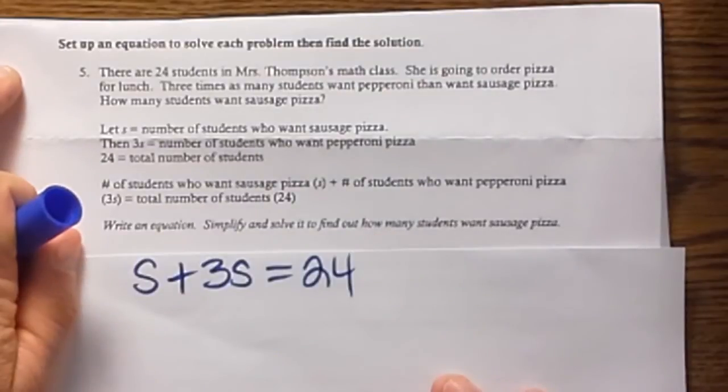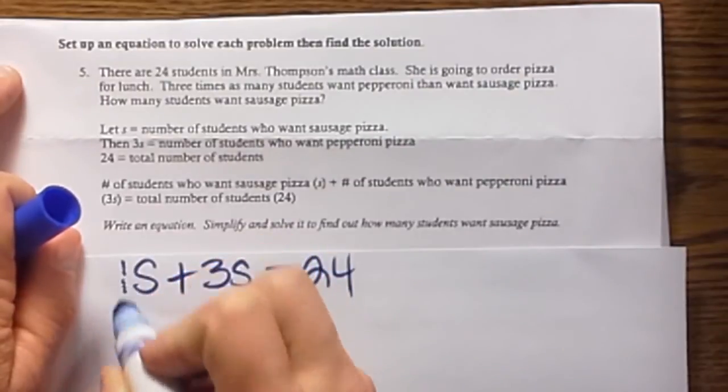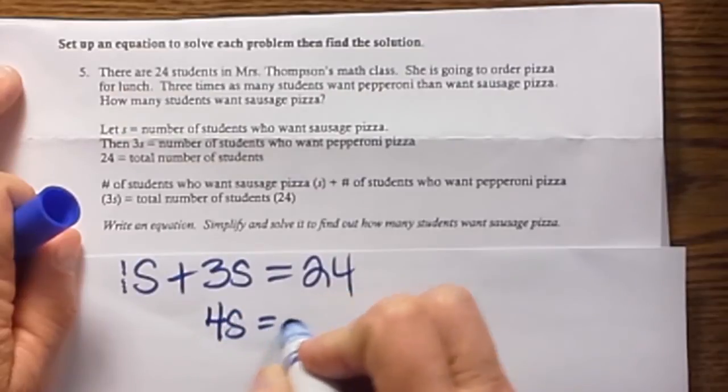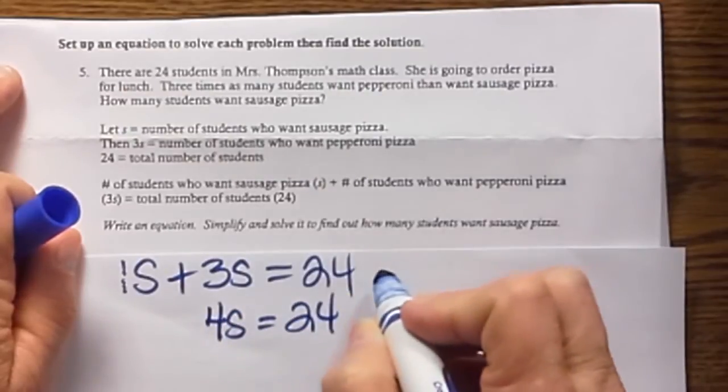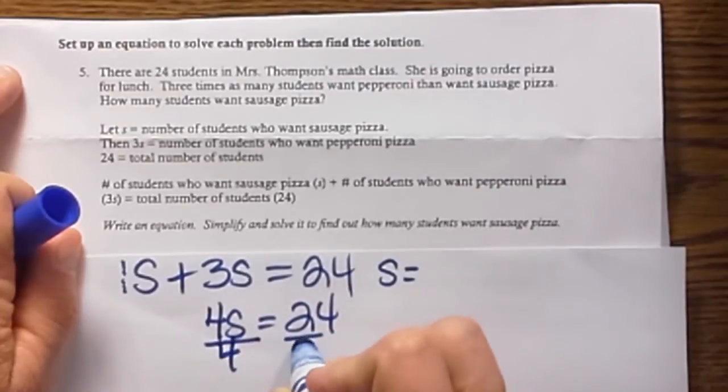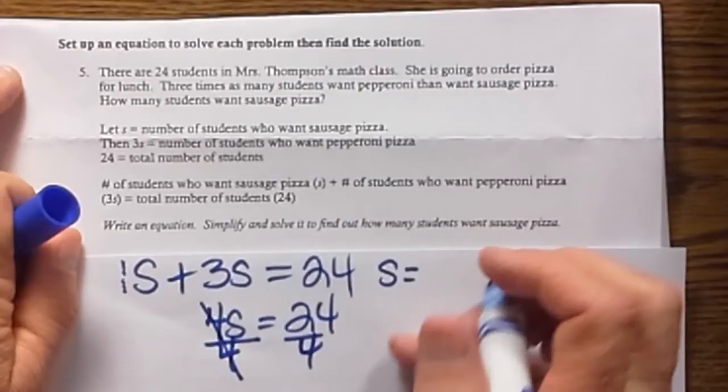Now if we add that together, 1S plus 3S, there is a 1 here. We don't write it, but we assume it. So that is going to give us 4S is equal to 24. So S is equal to, well we divide both sides by 4. The 4s cancel. So we have 24 divided by 4, which is 6.